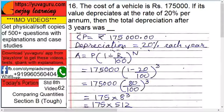So P is what? Initial cost: 175,000. Into 1 minus R is 20 upon 100, the whole cube. So solve this.